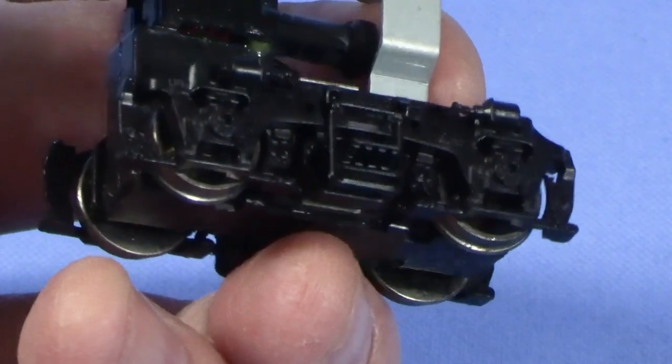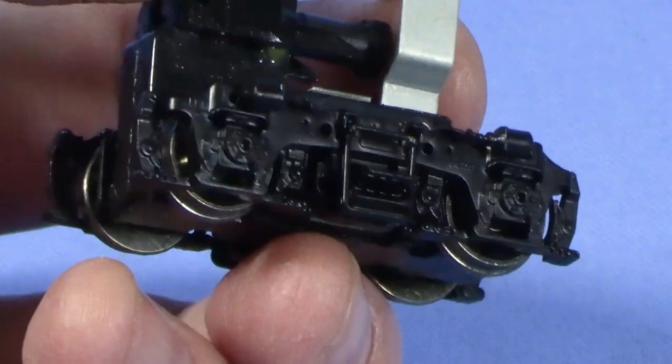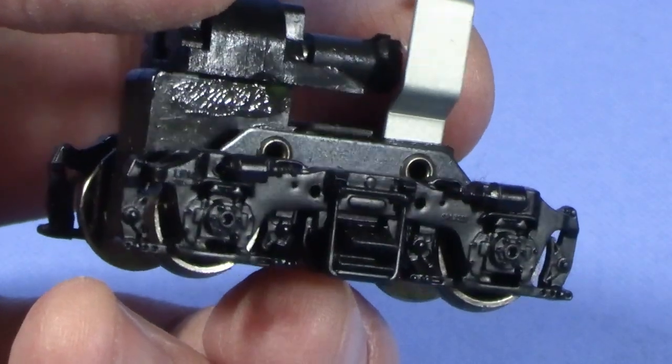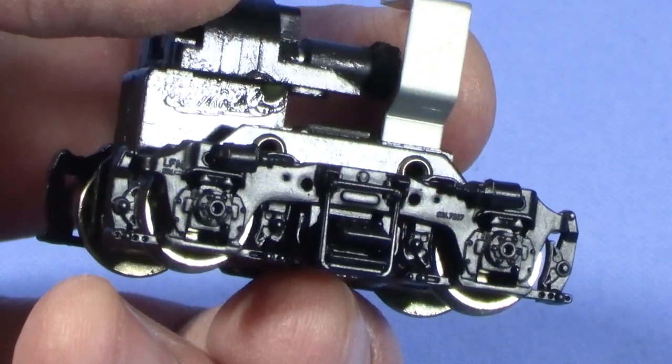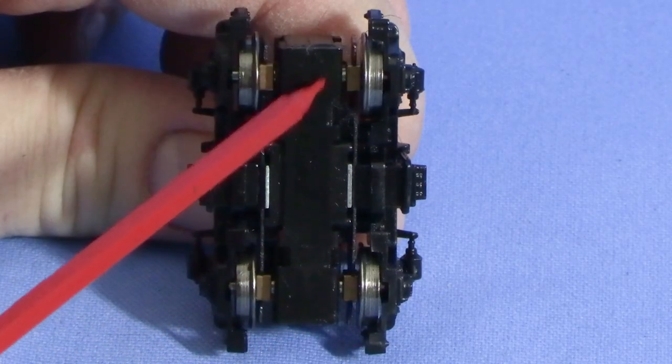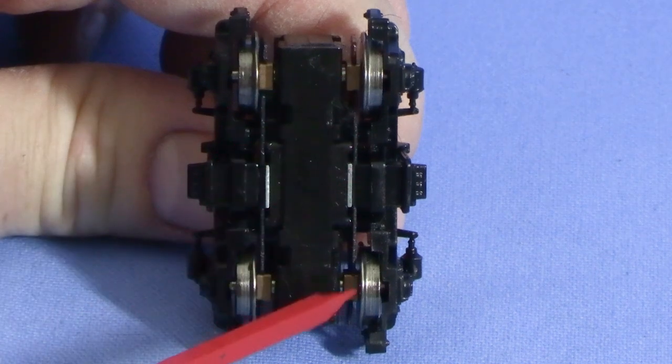The first is the Athern blue box style, which Athern has been using for years and still uses in some of its models. Proto 2000 also copied this design for some of its models, and there may be others. The Athern style truck has the axle bearings on the inside of the wheels.